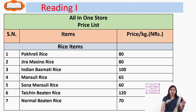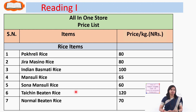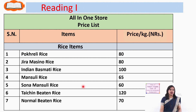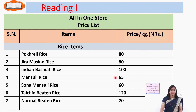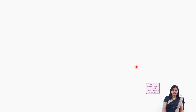Look at the chart once more. Which is the most expensive variety of rice? Yes, Taichen beaten rice at 120 rupees per kg. And which is the cheapest? Sona Mansuli rice at just 60 rupees per kg. There are also two varieties of rice that cost exactly the same — Pokhreli rice and Jira Masino rice, both at 80 rupees. Indian Basmati rice is 100 rupees per kg.